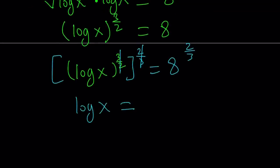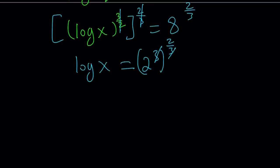Log x equals 8 to the power 2 thirds, but 8 can be written as 2 to the third power. Therefore, we can go ahead and simplify this further. The 3 is going to be canceled out when multiplied by 2 thirds, and we're going to end up with log x equals 2 to the power 2, which can be written as 4. So log x equals 4.